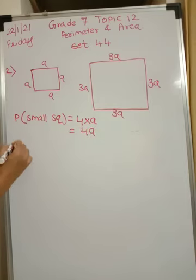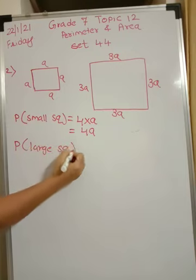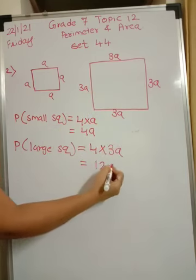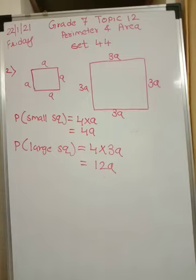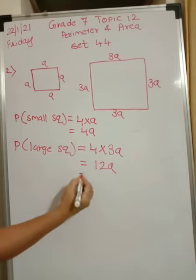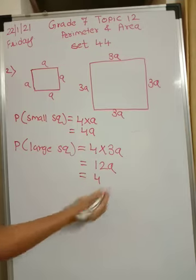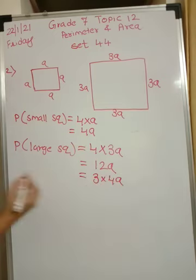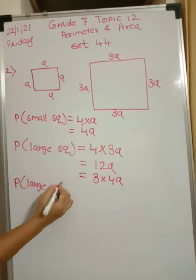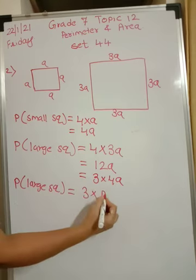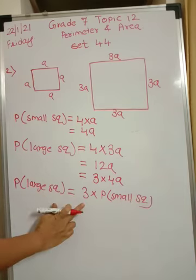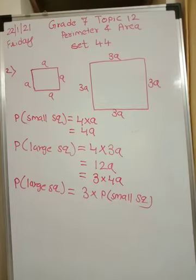Now the side is 3A. So the perimeter of the large or big square is 4 times 3A, which equals 12A. The perimeter of the smaller square is 4A and the perimeter of the larger is 12A. We can write 12A as 3 into 4A. Since 4A is the perimeter of the small square, the perimeter of the new square is 3 times the perimeter of the original square. The answer is 3 times.